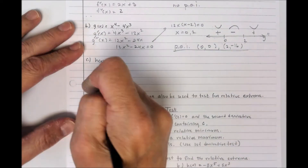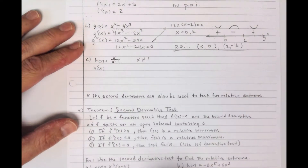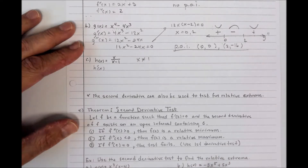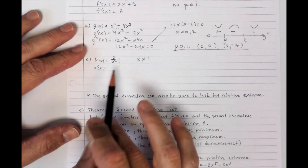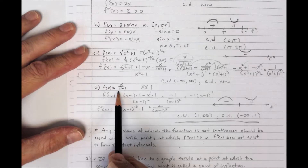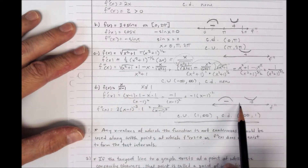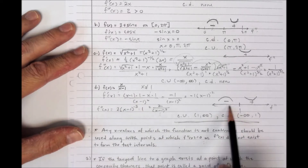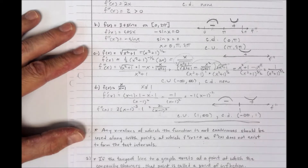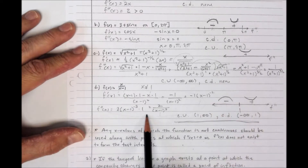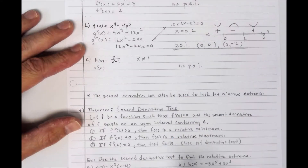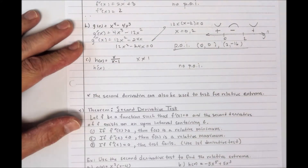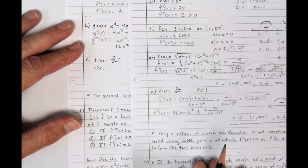For h(x) = x/(x−1) with x ≠ 1, we found earlier that the second derivative is 2/(x−1)³. The function is not defined at x = 1, so we cannot have a point of inflection there. Even though concavity changes across x = 1, because the function is not defined there, there are no points of inflection.